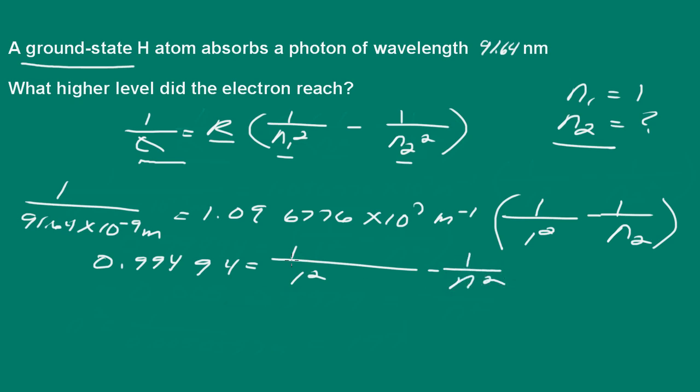So I'm going to subtract 1 from both sides. We end up with 0.99494 minus 1 is equal to negative 1 over N squared. So that's going to give us negative 0.00506, that's equal to negative 1 over N squared.